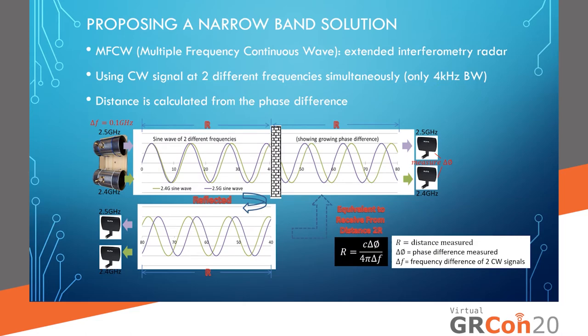My proposed narrowband solution uses MFCW, which stands for Multiple Frequency Continuous Wave, and uses two continuous waves at two different frequencies simultaneously to calculate the distance using the phase differences. For example, as shown in this diagram, we have a 2.5 gigahertz and a 2.4 gigahertz signal — two different frequencies giving two different wavelengths. Once they bounce off the target, they come back with different phase differences, and the phase difference between these two frequencies increases linearly, so we can use those phase differences to calculate the distance.